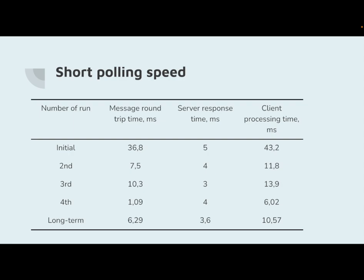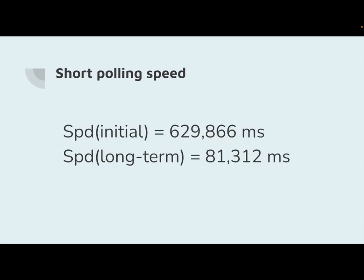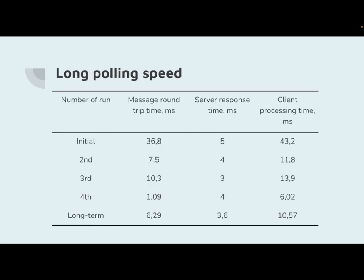The results of measurements for the short-polling approach are shown on this slide. We performed four runs and recorded the time for each factor. The long-term value is calculated as an average of the consecutive runs, and using the proposed formula we calculate the speed impact for both initial and long-term performance. In the same way, we measured speed for the long-polling application, with results presented on the slide.